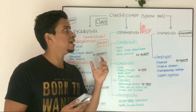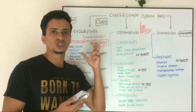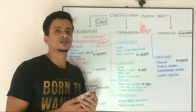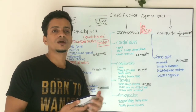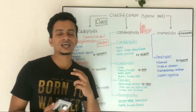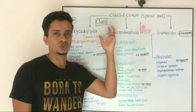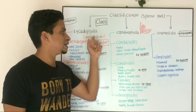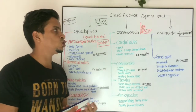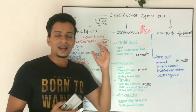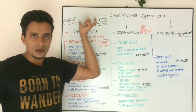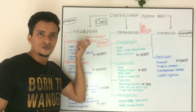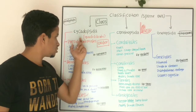In the gymnosperm class, there was a classification proposed by Sporne in 1965. According to Sporne, gymnosperms are classified into three major classes: Cycadopsida, Coniferopsida, and Gnetopsida. These classes are again divided into four major orders.